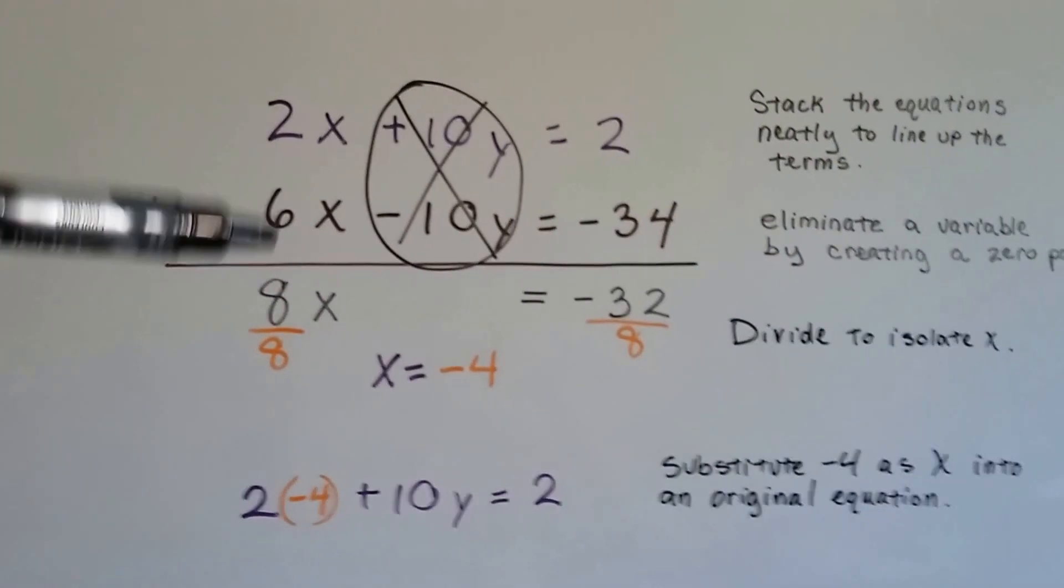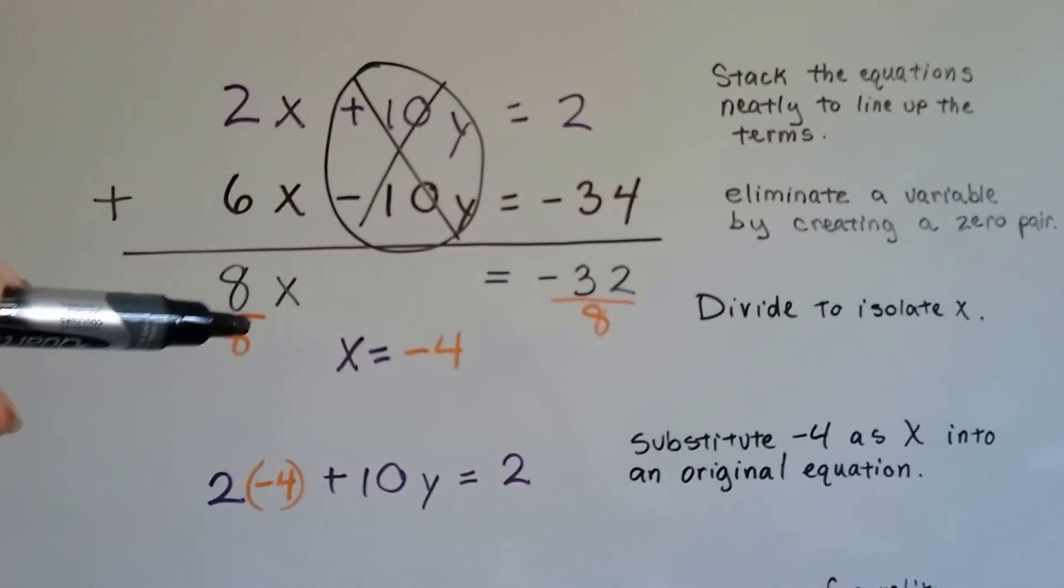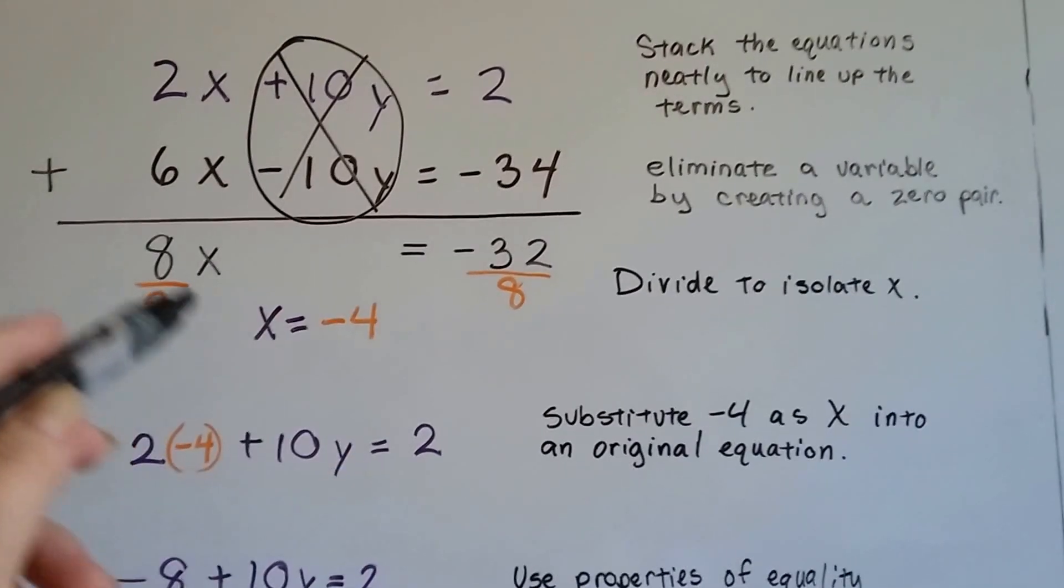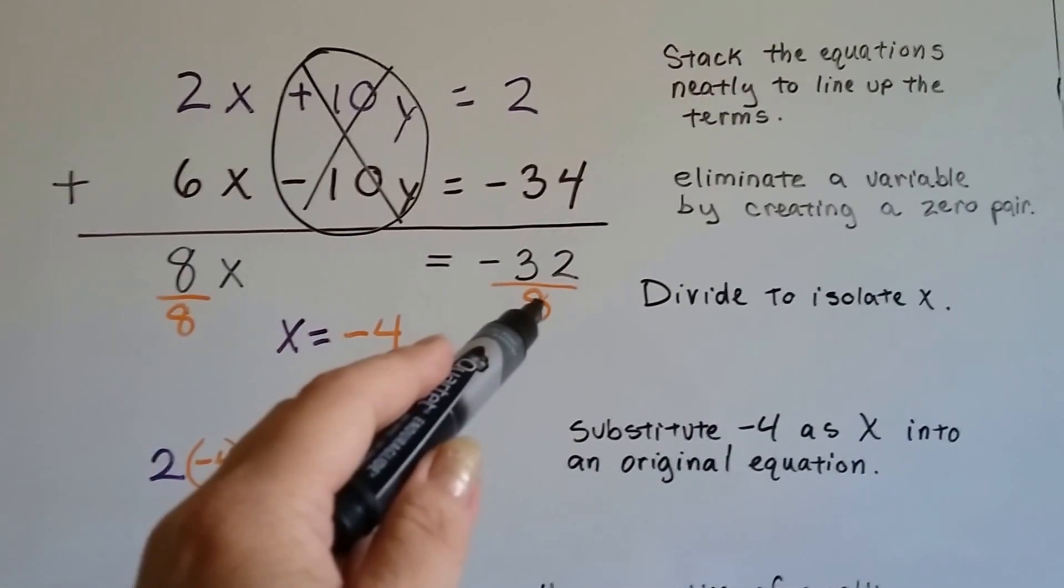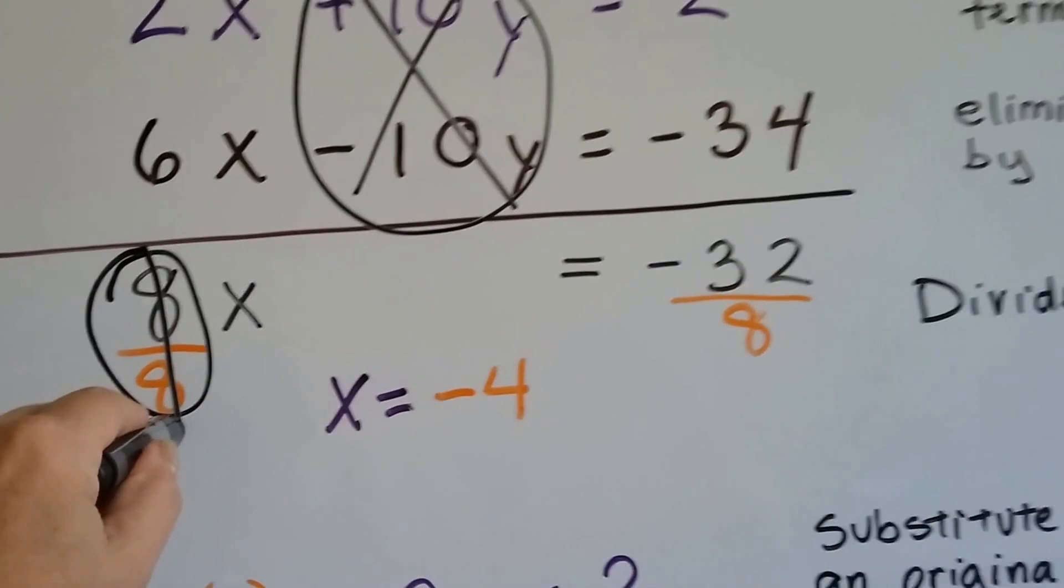So now we add these and we get 8x equals negative 32. We divide both sides by 8 to isolate that x and negative 32 divided by 8 is a negative 4.